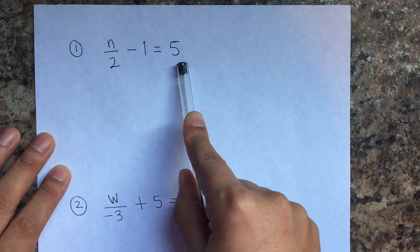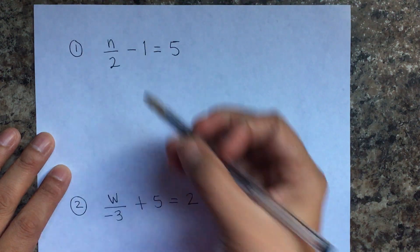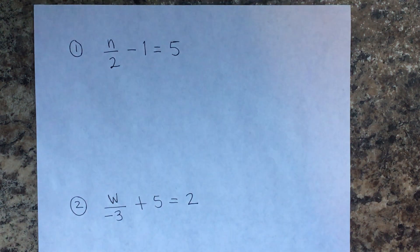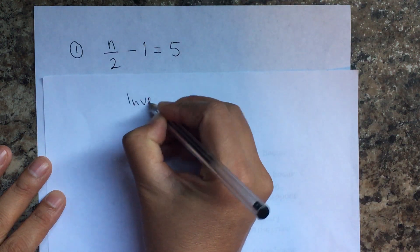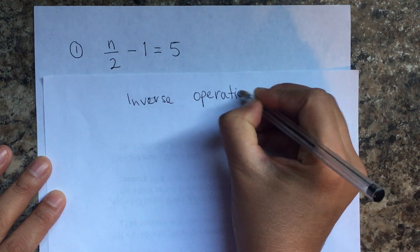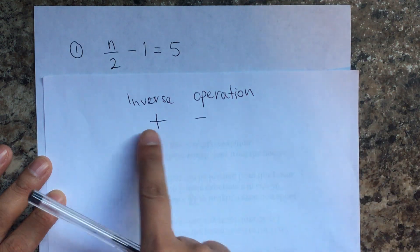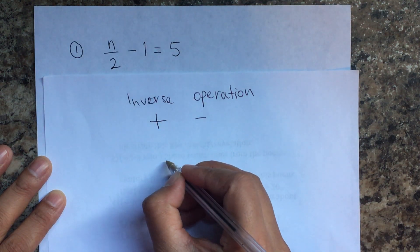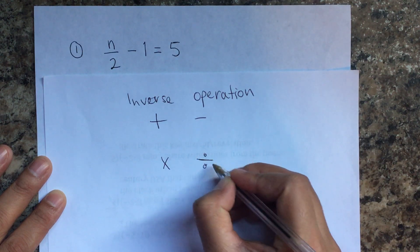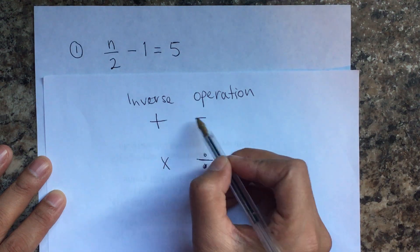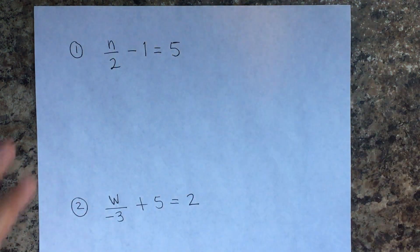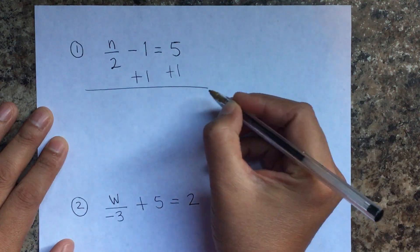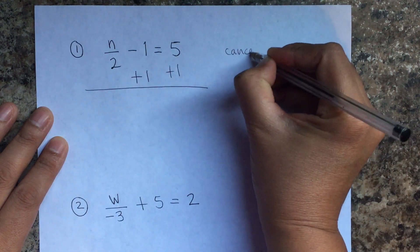To figure out what that number is, we're going to use inverse operations. Remember from previous lessons: inverse operations mean that addition and subtraction cancel each other. Here we have minus, so we're going to add instead. And division and multiplication cancel each other — they cancel each other.